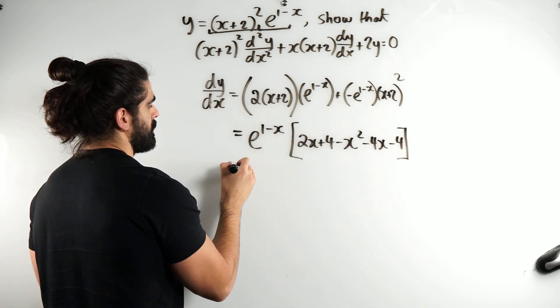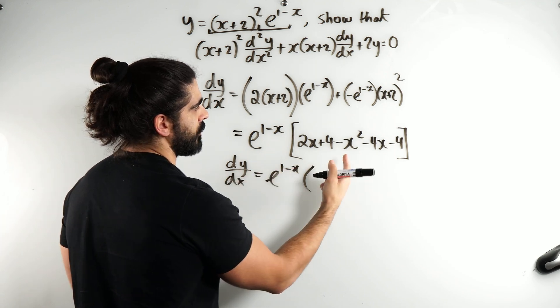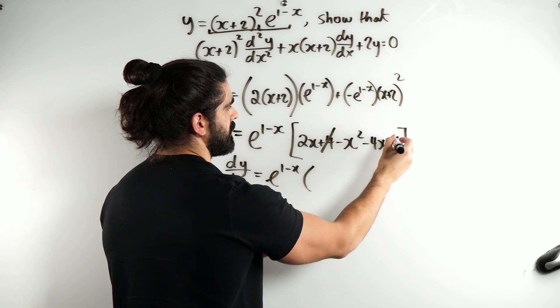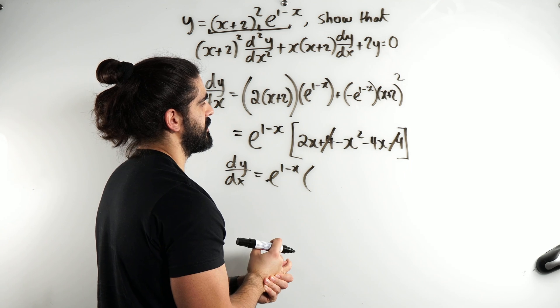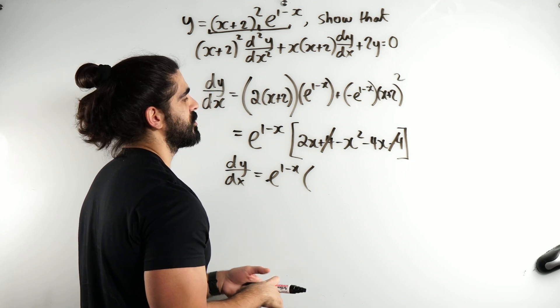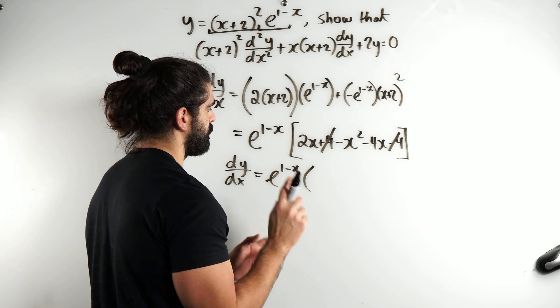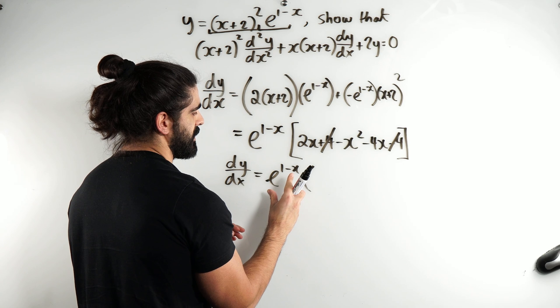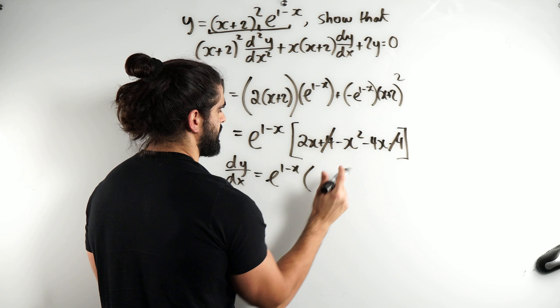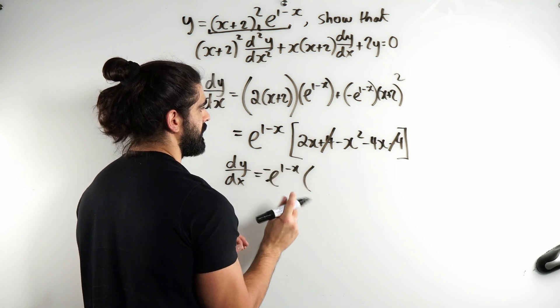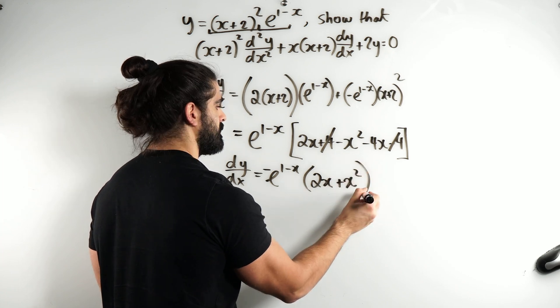So, we are going to differentiate using the product rule again. We've got 2x minus, oh, these cancel. 2x minus 4x is minus 2x. So, maybe I actually want to take out a minus. The reason I might want to take out a minus is because this differentiates to a negative on the outside. So, this is minus 2x minus x. I'm going to take out a minus. So, this actually becomes 2x plus x squared.